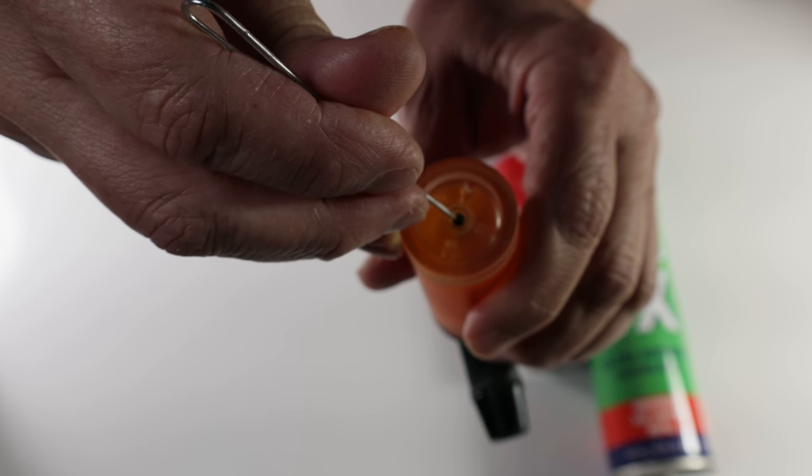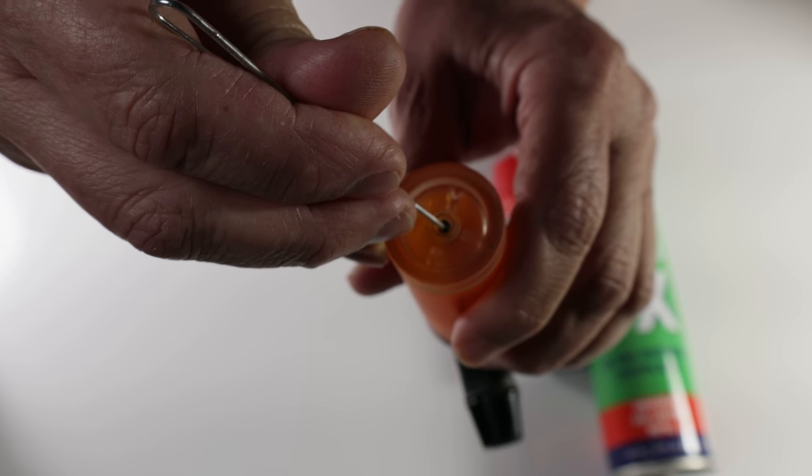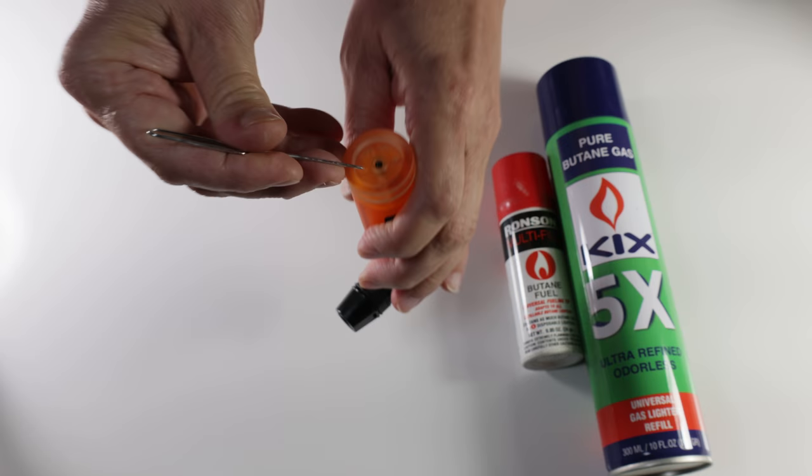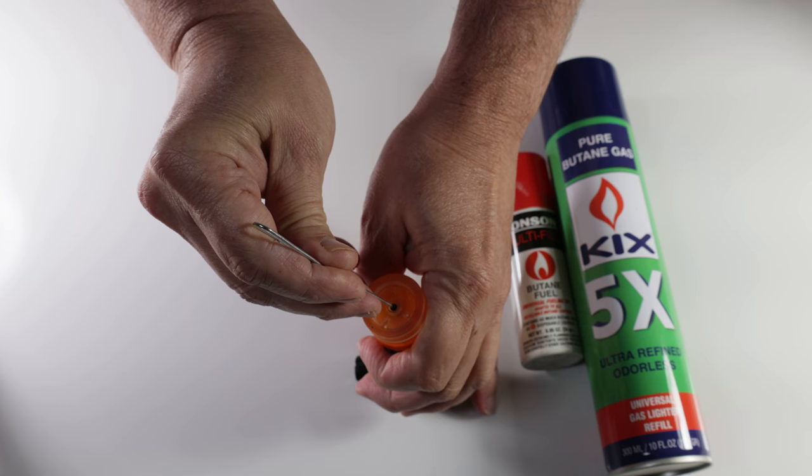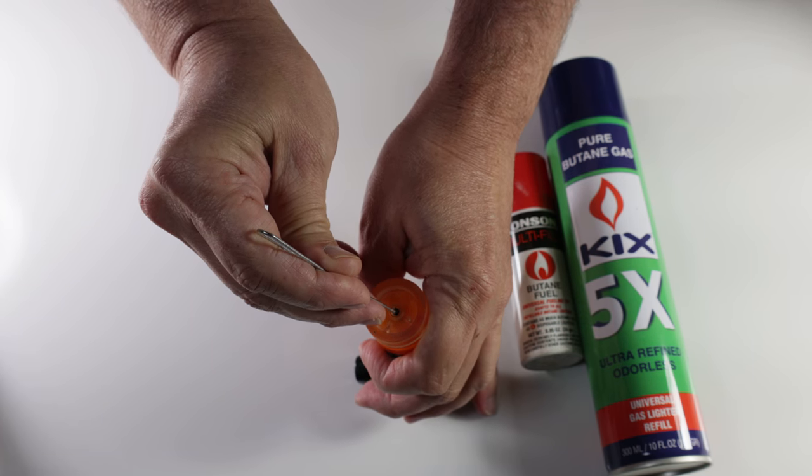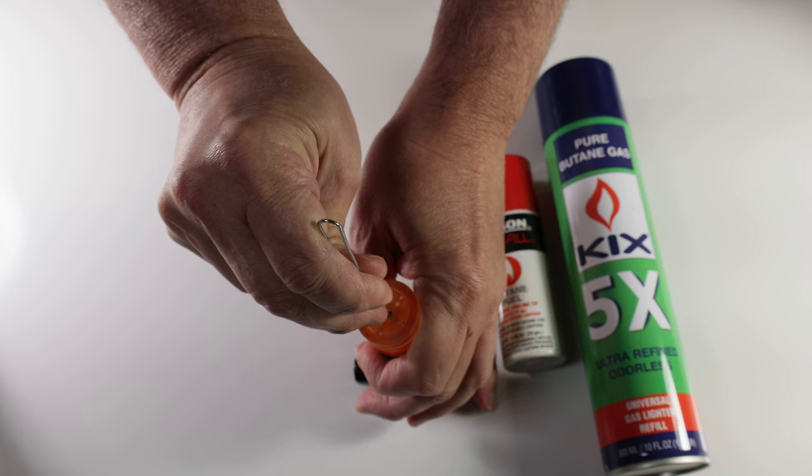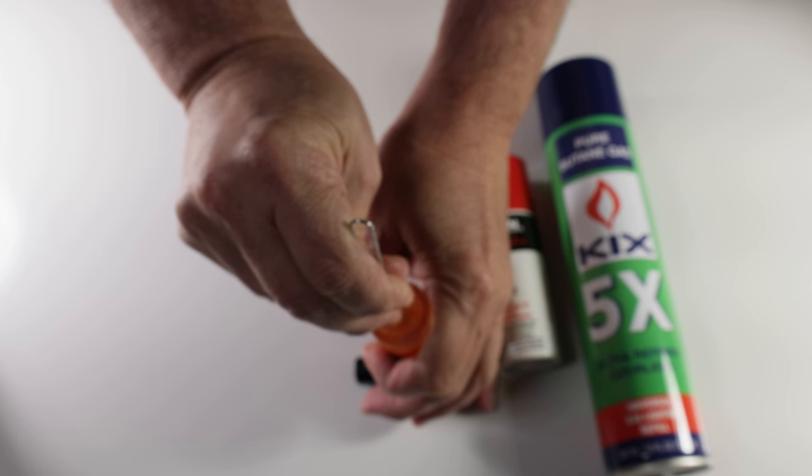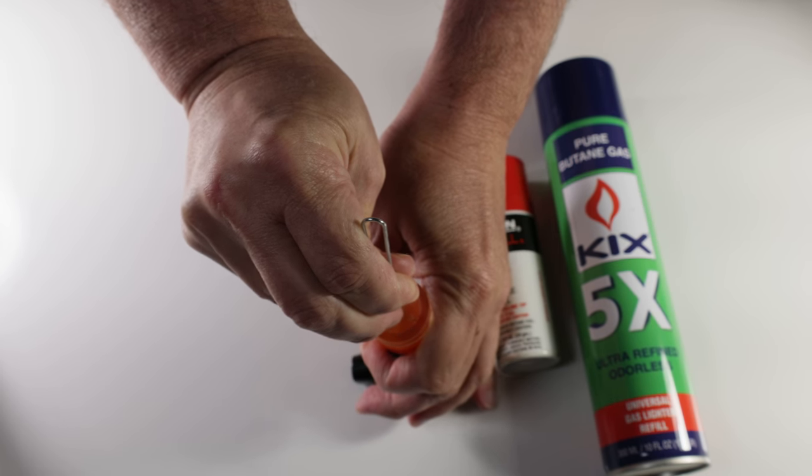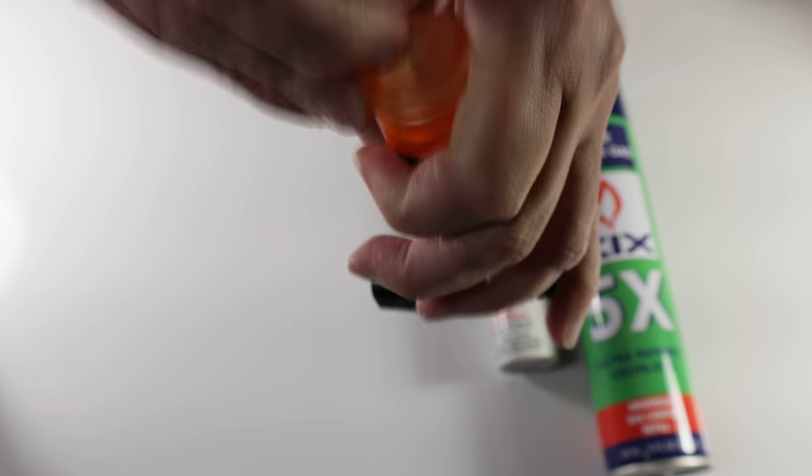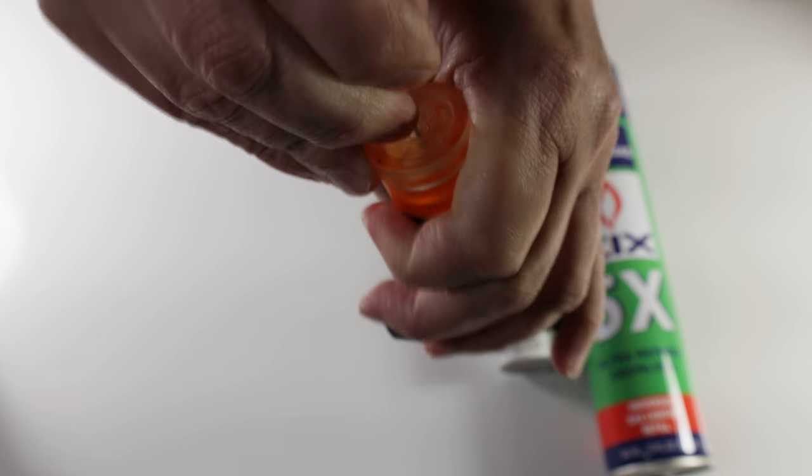...right in the middle of that metal part right there, then shake it until it stops purging. Now you have an empty lighter.